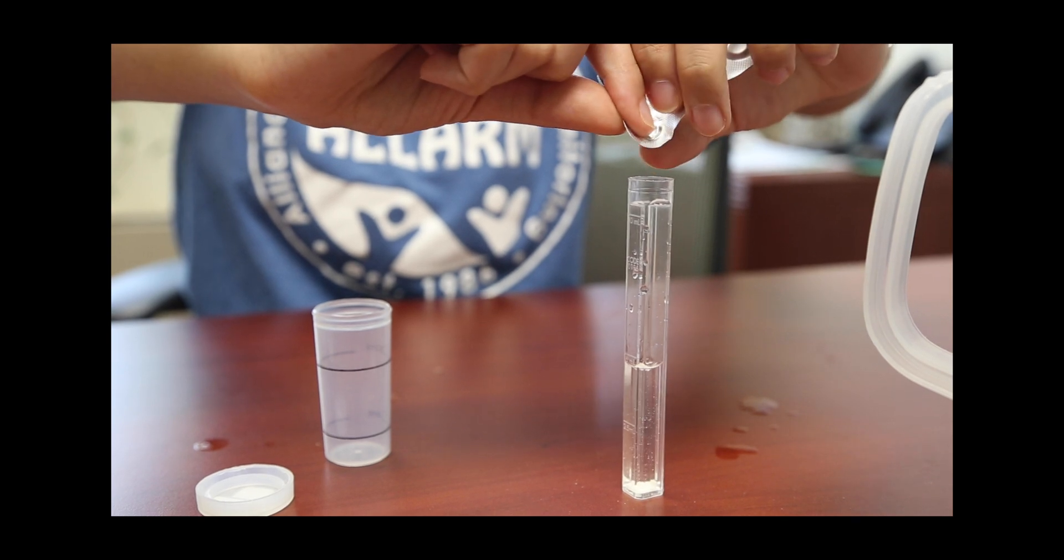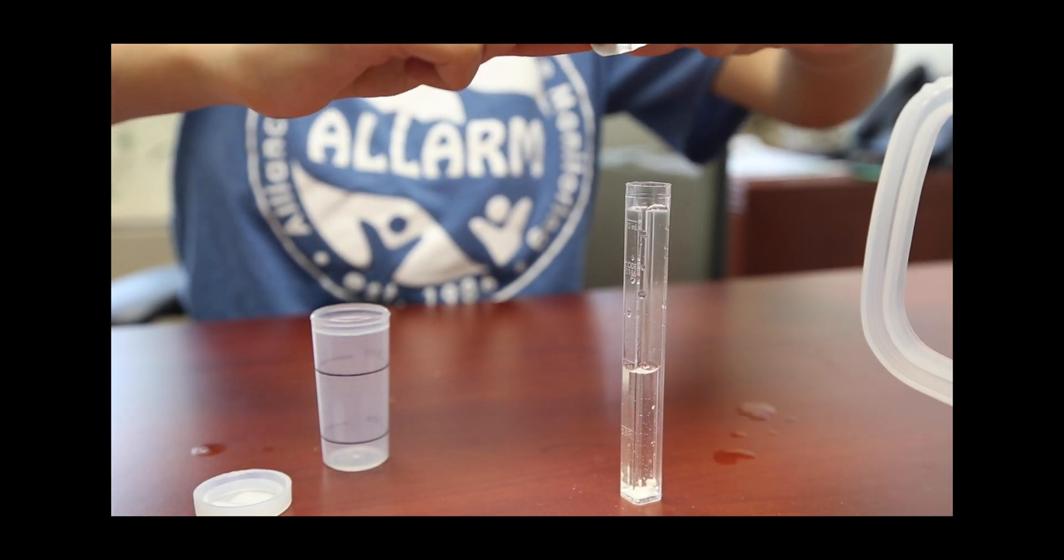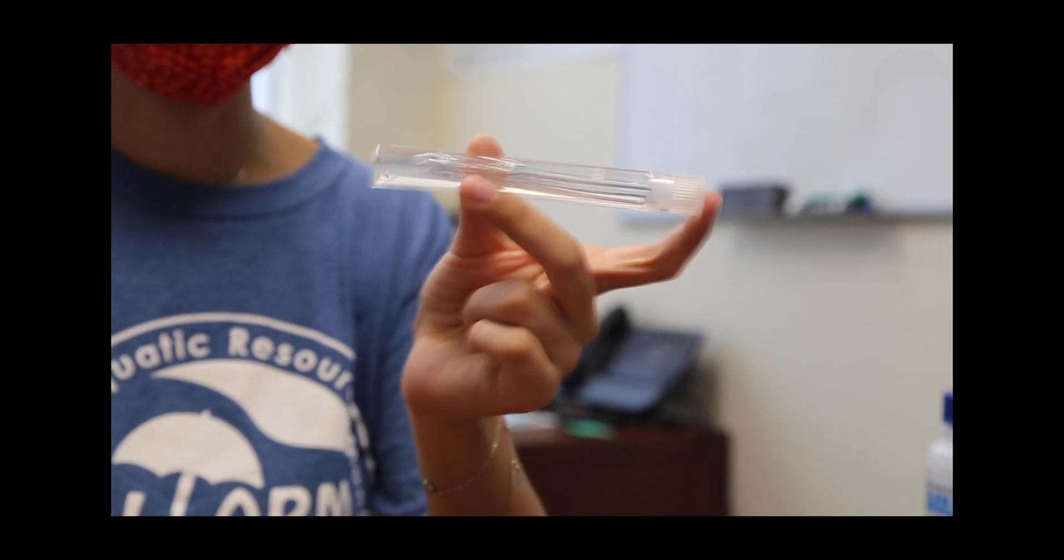Next, add the Nitrate Number 1 tablet to the test tube and cap it. Shake the test tube until the tablet dissolves, or nothing is visibly settled at the bottom. This can take about 30 seconds.